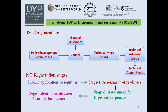This picture shows the organization of ISO. In the organization of ISO, there is a council, which is created by policy development committees and the general assembly. This council creates a technical management board. From this management board, there is an advisory group and technical committees.